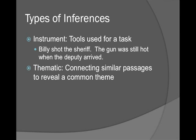A thematic inference is more complicated. This especially happens when you're flipping back and forth between different narrators in a text — if you've read Faulkner and been confused, it's because these are harder inferences. It also applies to flash-forwards or flashbacks with different time periods. You're connecting passages based on their common theme: who's doing the talking, what's going on.